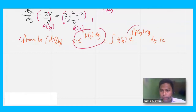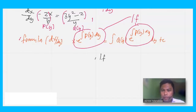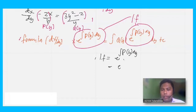These two e-raised-to-integral-of-p(y)-dy parts are common, so we can identify them as our integrating factor. To keep the solution manageable, let's solve the integrating factor first. That is e raised to the integral of p(y) dy, where p(y) is negative 2 over y, times dy. Let's integrate that.